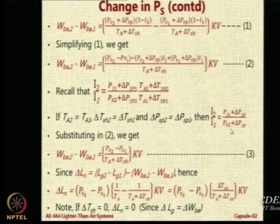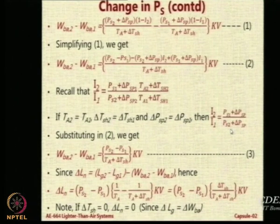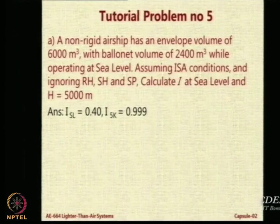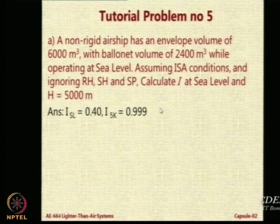I2 equals I1 times P1 over P2. P1 is sea level, P2 is ambient at 5000 meters, so the ratio P1 over P2 is greater than 1. The pressure ratio P5000 over P-sea-level is approximately 0.53. Multiplying by I1 gives 0.999. We expect it to be nearly 1, which is correct. So I-sea-level is 0.6 and I at 5 km is 0.999.